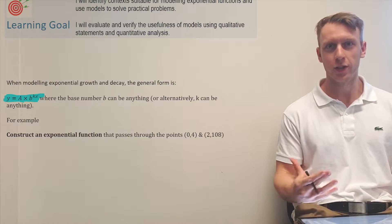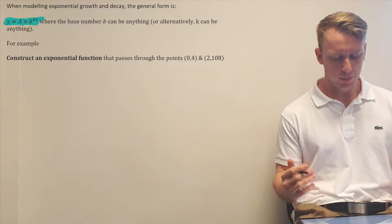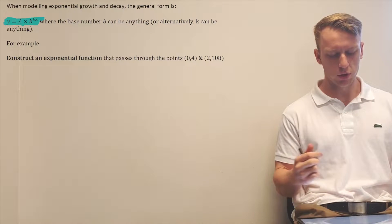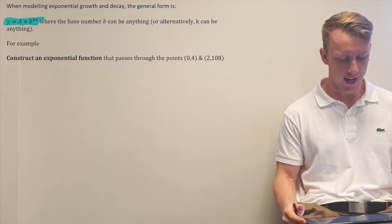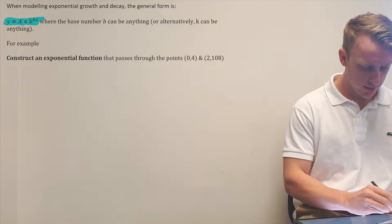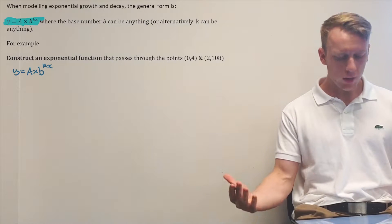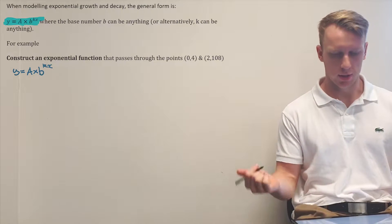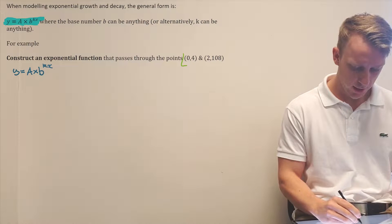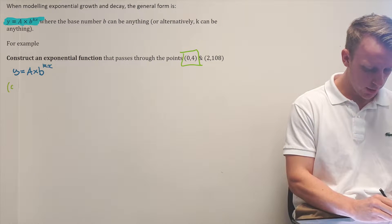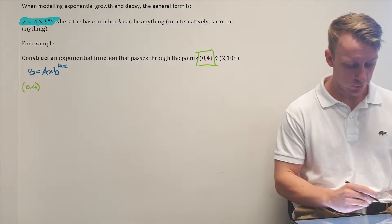Here's an example to illustrate: construct an exponential function that passes through the two points (0, 4) and (2, 108). We know the general form, and we could try to solve this using simultaneous equations. Taking the first point (0, 4), we'll substitute in and solve.